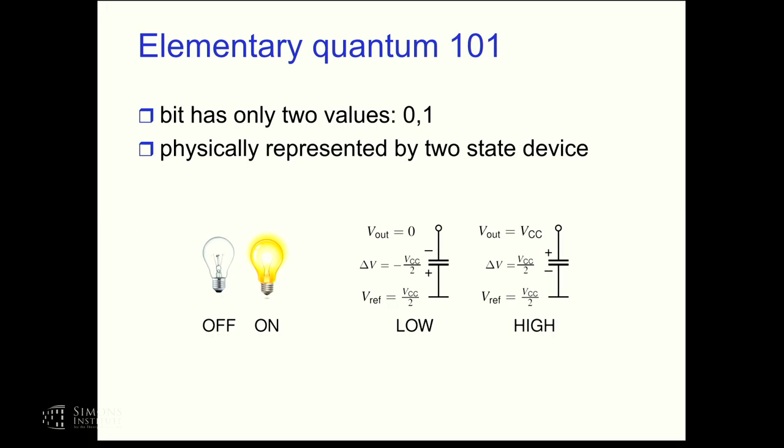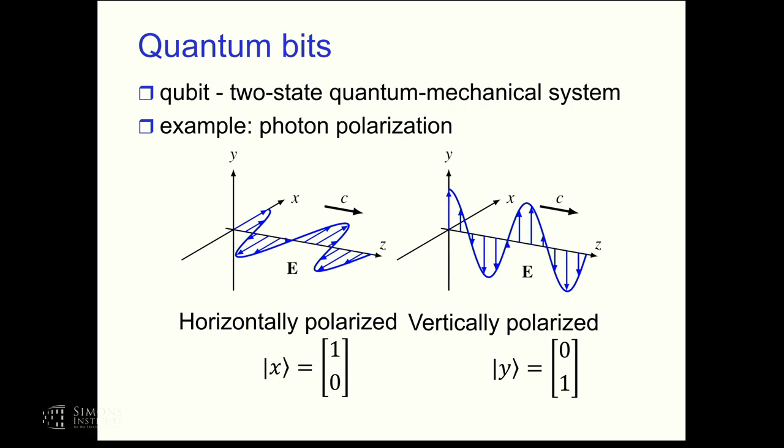So elementary quantum 101. We're familiar with digital technology. You have a bit that has only two values, zero and one. There are lots of ways that you can represent it. The canonical example, of course, is a light bulb off on, but it could be low or high voltage in a circuit. But what we're interested in are quantum bits, and it's termed a qubit, and it basically corresponds to a two-state quantum mechanical system. And a canonical example is photon polarization where you can have polarization in the horizontal plane, and you could have it in the vertical plane. And these two states then are represented using bracket notation like this. But as Darius said, it's basically glorified linear algebra in terms of what goes on here.